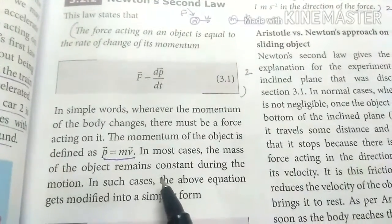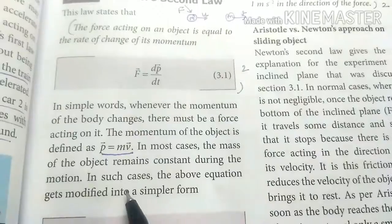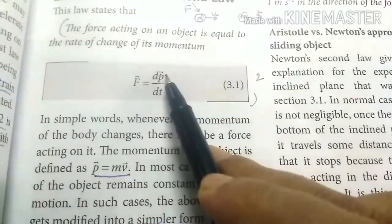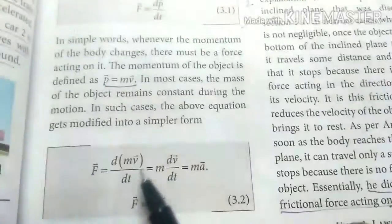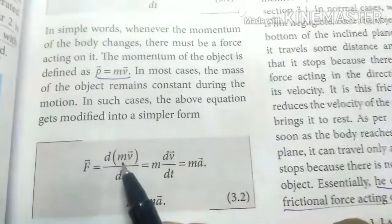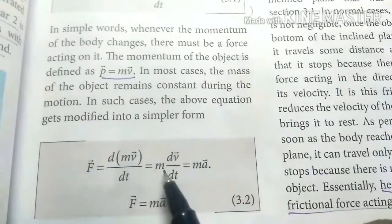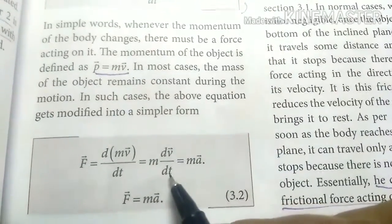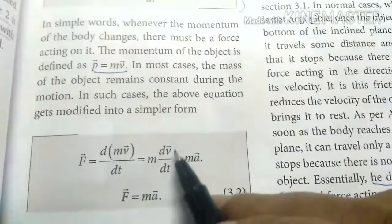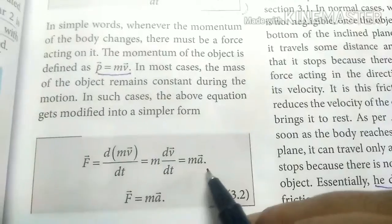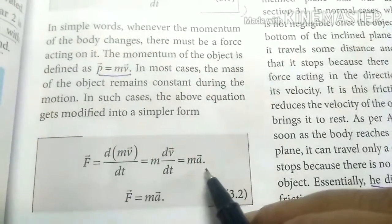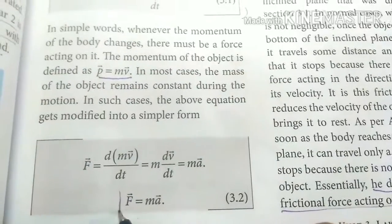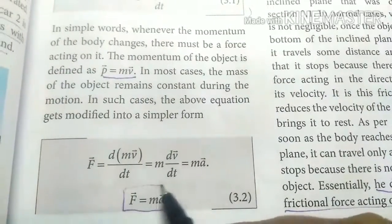If you have a body of mass that is constant during motion, then dV by dt — the rate of change of velocity — is acceleration.